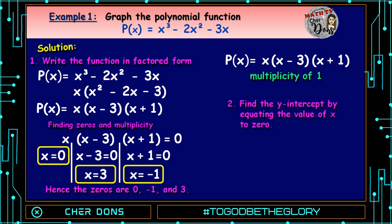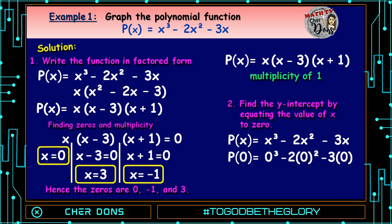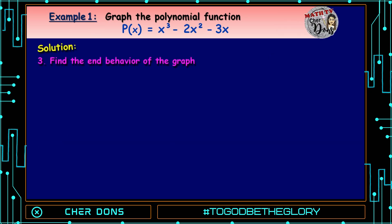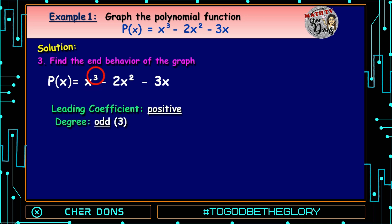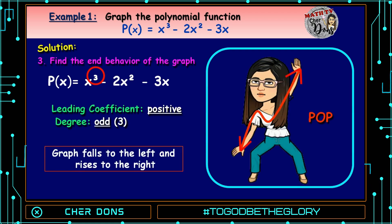Step number 2: finding the y-intercept — equate x to 0. We have P(x) = x³ - 2x² - 3x. Substituting 0: 0³ - 2(0²) - 3(0) = 0. That's our y-intercept. For step number 3: finding the end behavior using the leading coefficient test. P(x) = x³ - 2x² - 3x. The leading coefficient is positive, and the degree is odd — it's 3. It's POP: positive odd power. So the graph falls to the left and rises to the right.